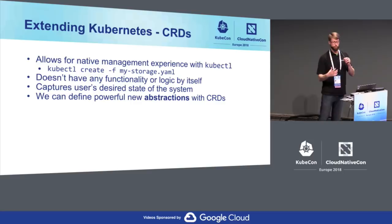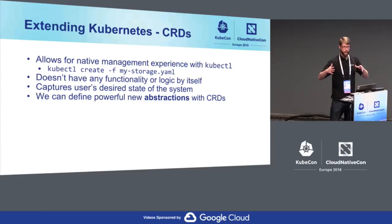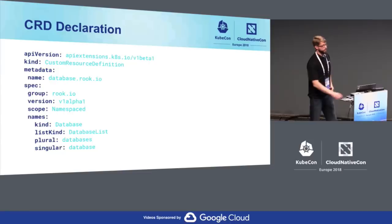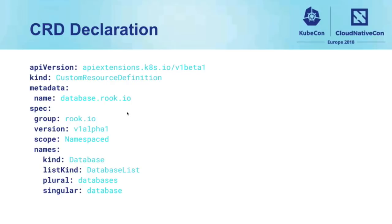This is what a CRD declaration looks like in YAML. You're basically saying this is a custom resource definition, you give it your API group information, the version of it, and what we're looking at here is the kind of 'database.' This is what it would look like to define a sort of abstract, portable concept of a database.